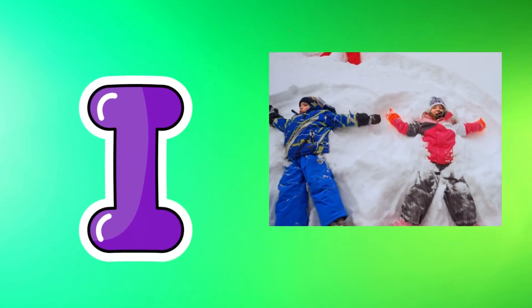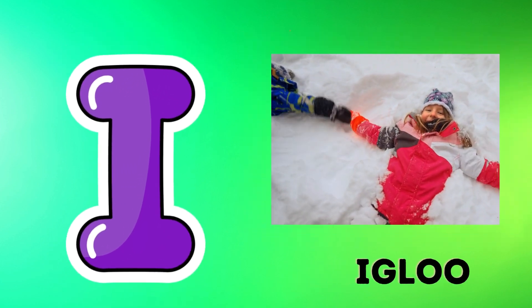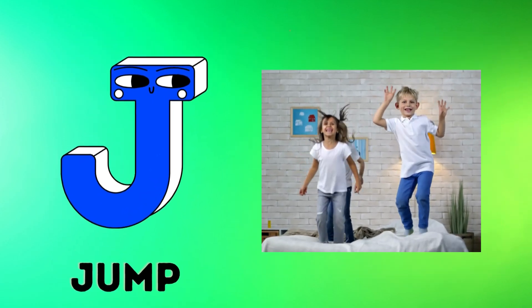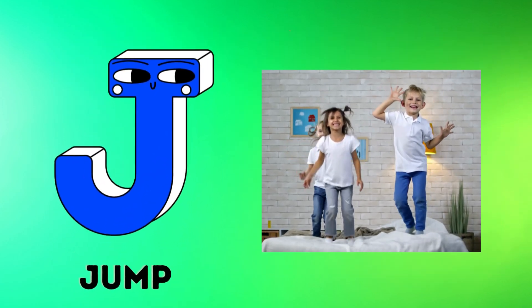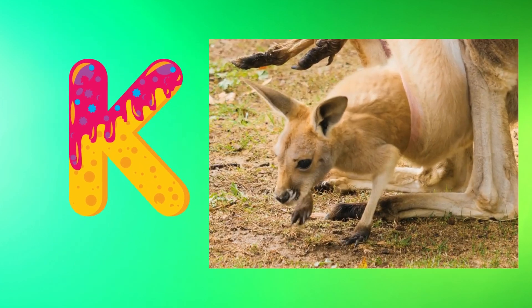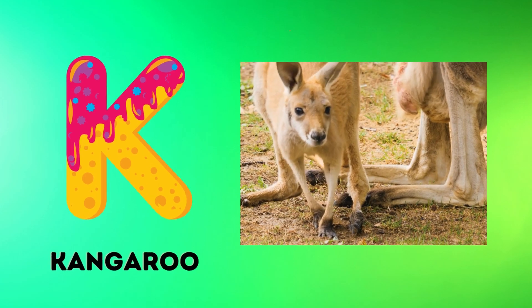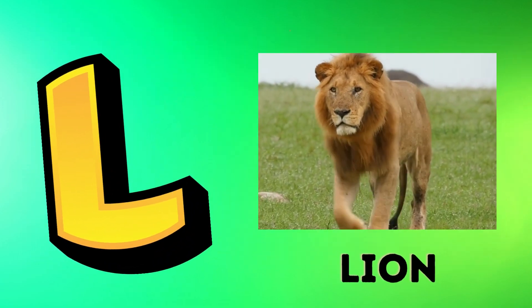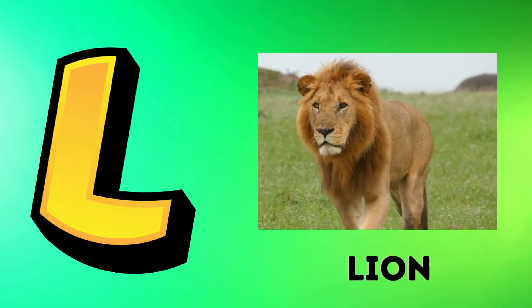I is for igloo, i-i-igloo. J is for jump, j-j-jump. K is for kangaroo, k-k-kangaroo. L is for lion, l-l-lion.